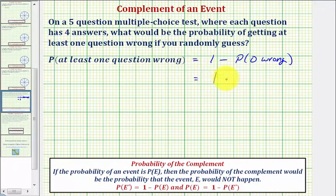So we'd have one minus. Now to determine the probability, we know we want to compare the favorable number of outcomes to the total number of outcomes. So let's first determine the total number of outcomes of our test, and we can do this using the counting principle.